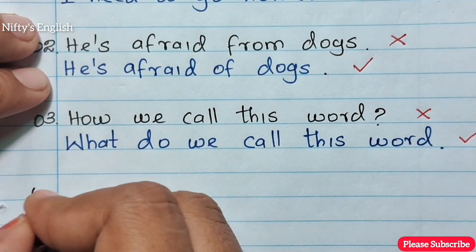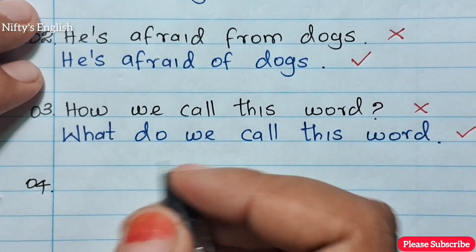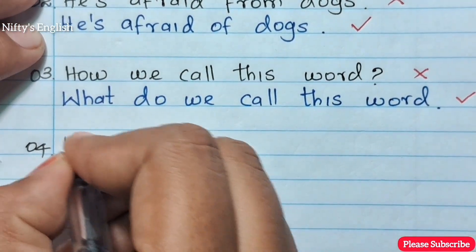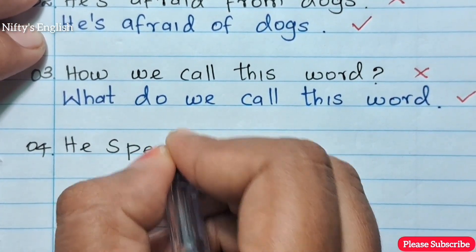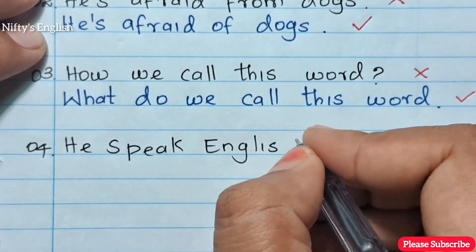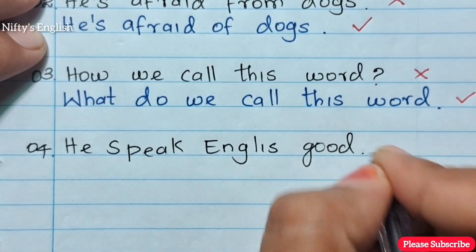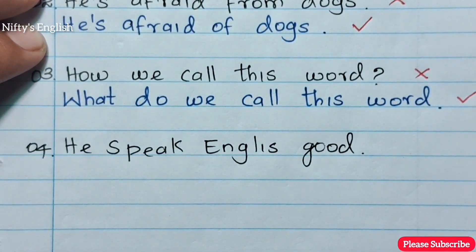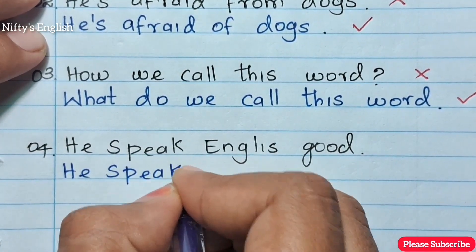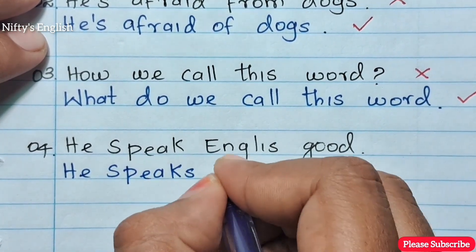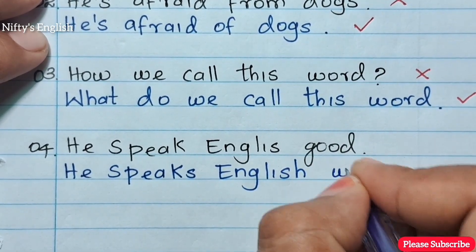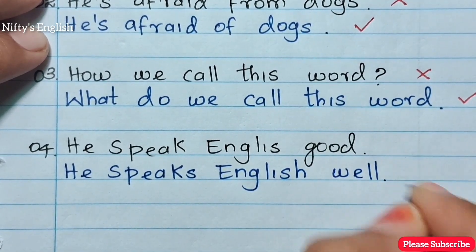Number four: 'He speaks English good' is the wrong sentence. 'He speaks English well' is the right sentence.